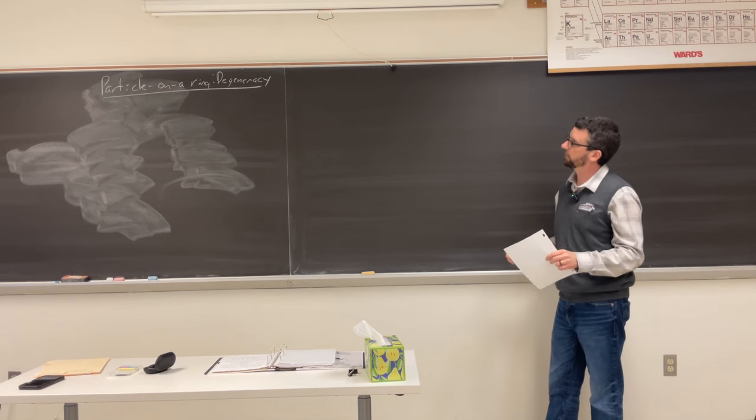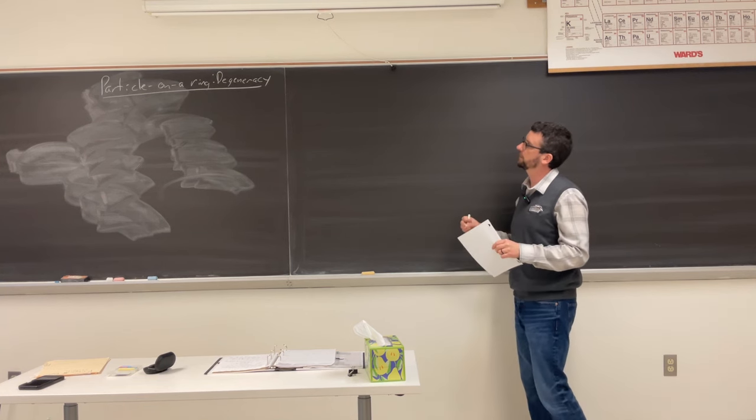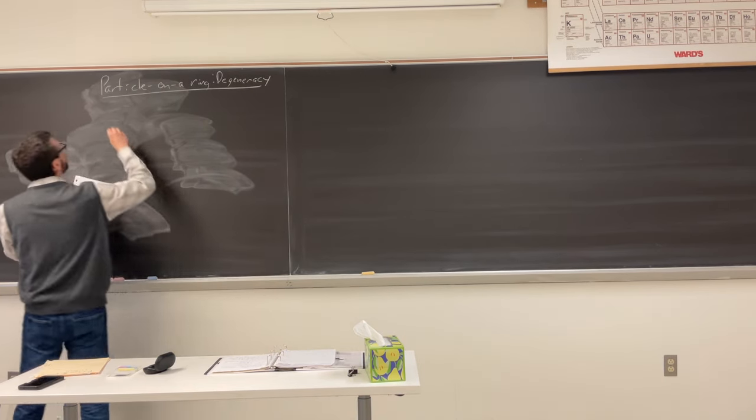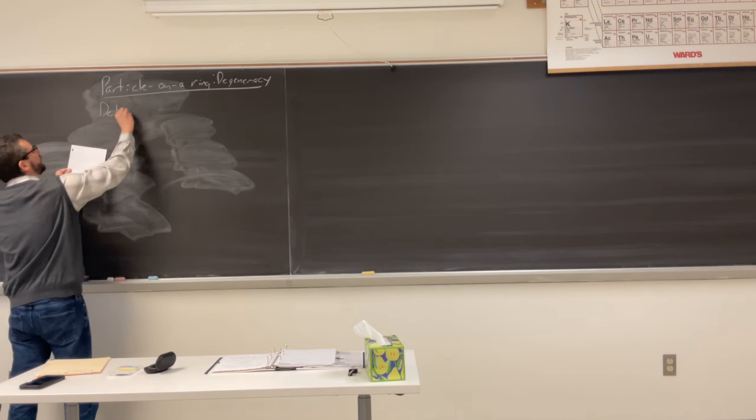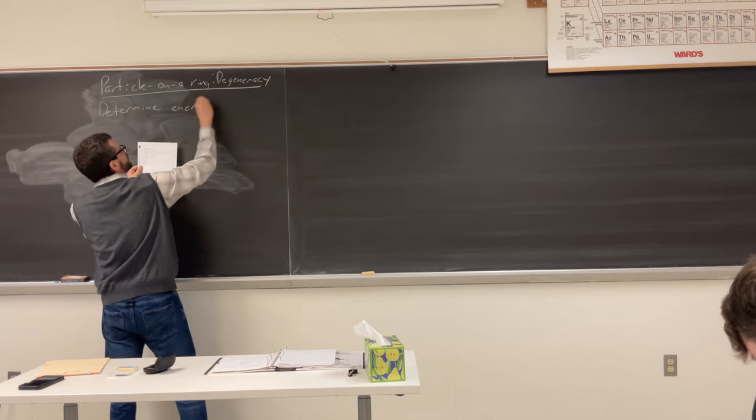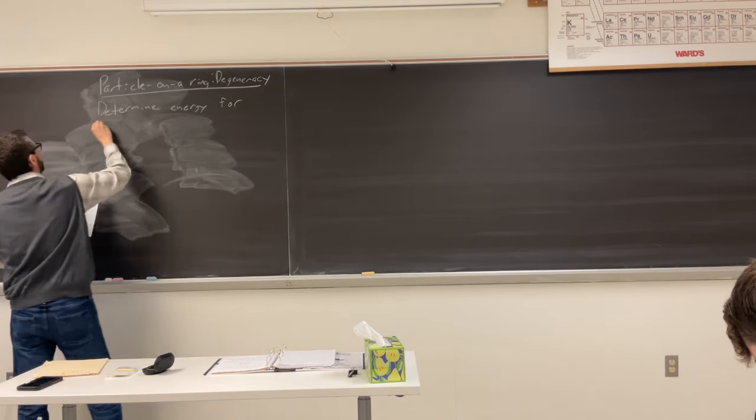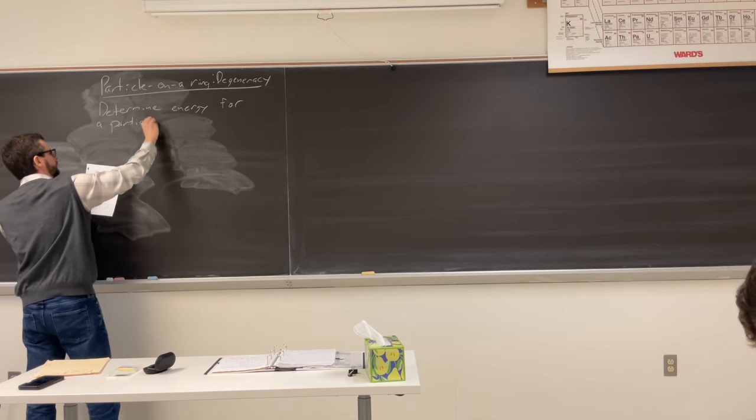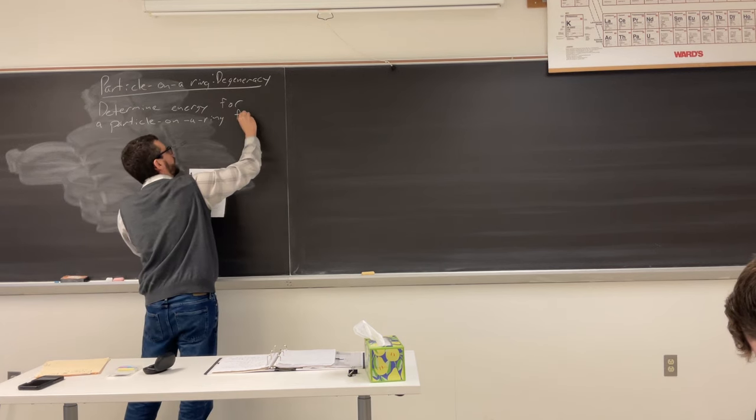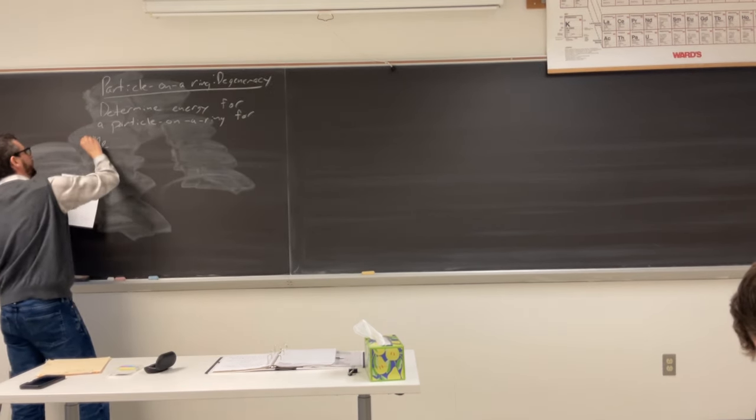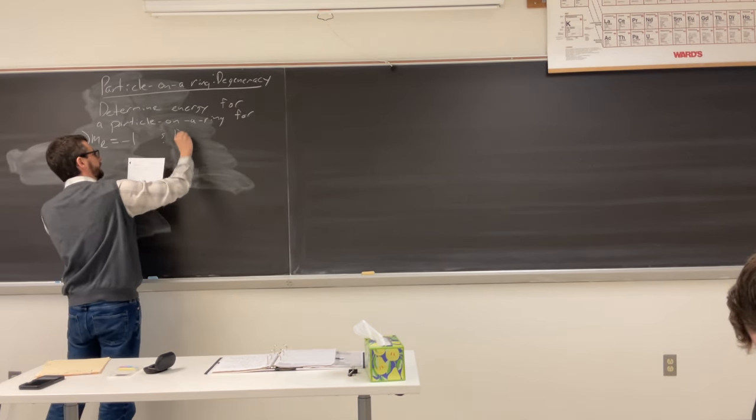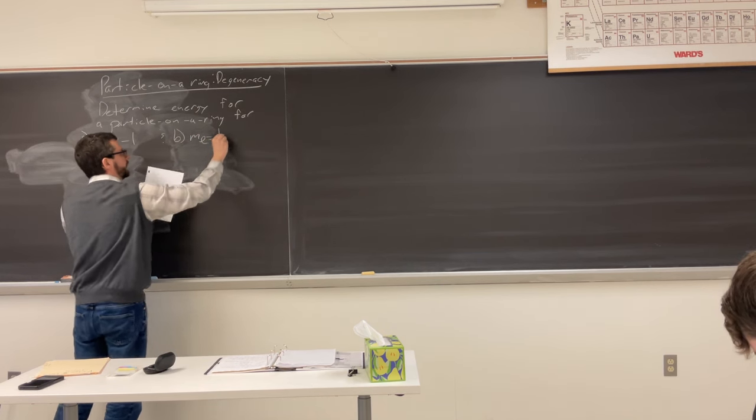So in the case of particle on a ring, we can have different degenerate wave functions. And we need to try to determine those. So as an example, let's determine the energy for a particle on a ring. We'll do ml equal to negative 1, and ml equal to positive 3.